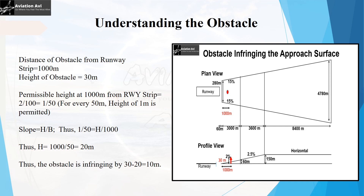The permissible height at a distance of 1,000 meters from the runway strip is calculated using the slope of 2 percent, since a 2 percent slope is permitted from the beginning of the approach surface to 3,000 meters. A slope of 2 percent equals 1/50, meaning for every 50 meters from the beginning of the approach surface a height of 1 meter is permitted. So: 1/50 = height permitted / 1,000 meters, giving a permissible height of 20 meters. Since the tail height is 30 meters, it is infringing the approach surface by 10 meters.